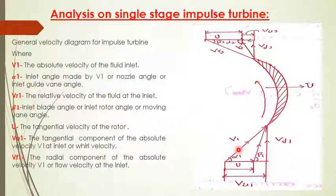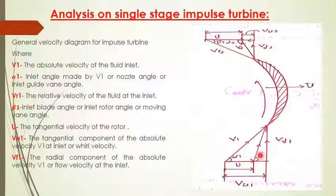Vr1 is the relative velocity of the steam at inlet. Beta1 is the inlet blade angle — we can also call it the inlet rotor angle, moving vane angle, or the angle made by the relative velocity at inlet.